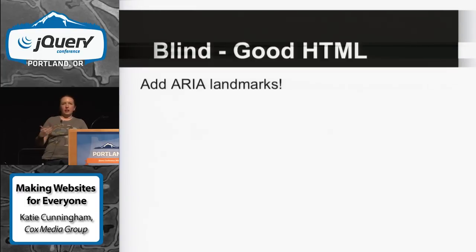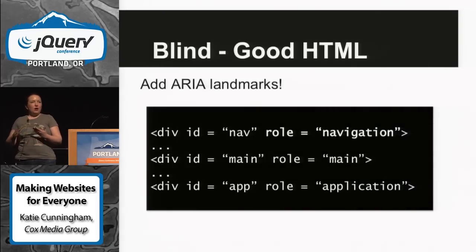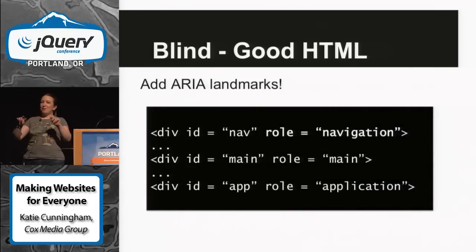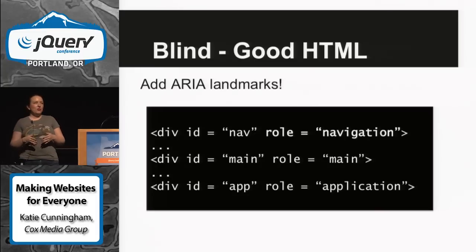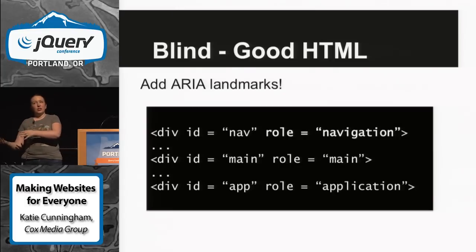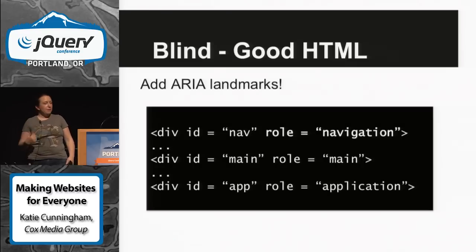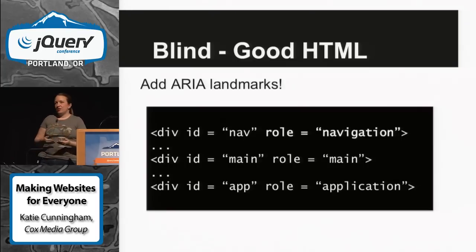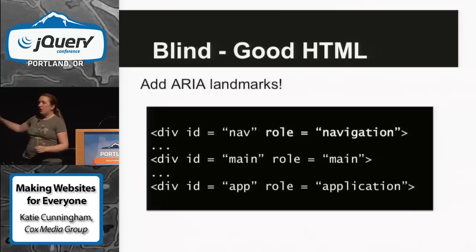For the blind, you also want to add ARIA landmarks. ARIA is one of the newest parts of the HTML spec before HTML5, and one of the fastest to go through. Basically, it gives roles to elements — it tells a screen reader what it's dealing with. If you give a div a role of 'navigation', it knows it's a navigation element and the screen reader can say, 'There's a navigation element — do you want to skip to that?' If you give it a role of 'main', it'll say, 'Here's a main landmark.' They can jump around the page, making it much faster to navigate.